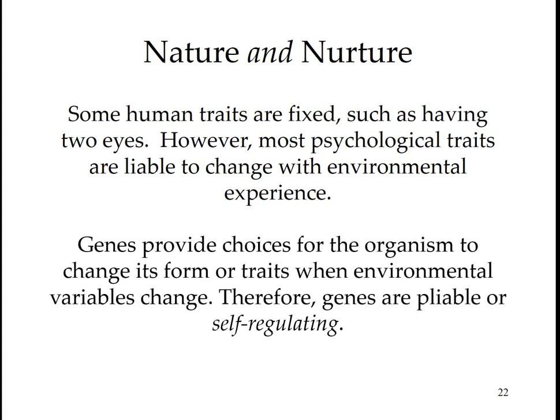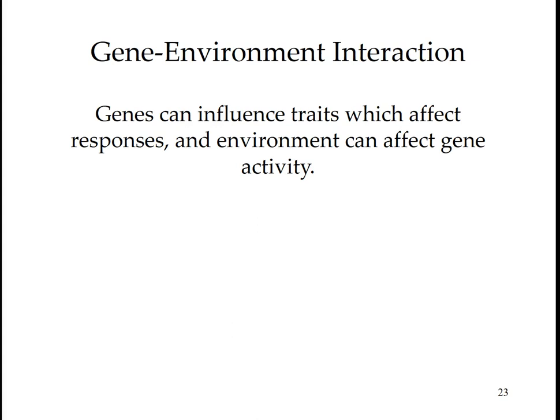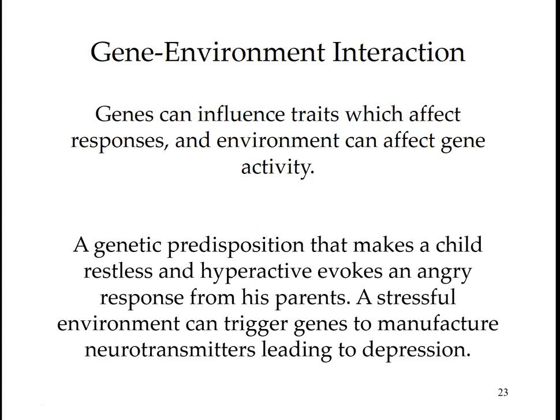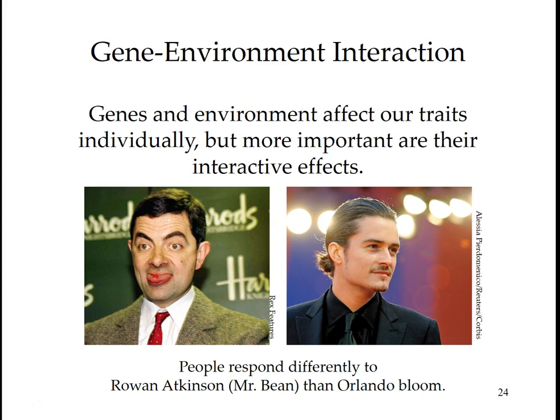Genes and environment work together. Because of human adaptability, most psychological traits are expressed in particular environments. Genes are self-regulating and can react differently in different environments. Genes provide choices for the organism to change its form or traits when environmental variables change; therefore, genes are pliable. Genes can influence traits which affect responses, and environment can affect gene activity. A genetic predisposition that makes a child restless and hyperactive evokes an angry response from parents. A stressful environment can trigger genes to manufacture neurotransmitters that will lead to depression. Genes and environment affect our traits individually, but more importantly through their interactive effects.